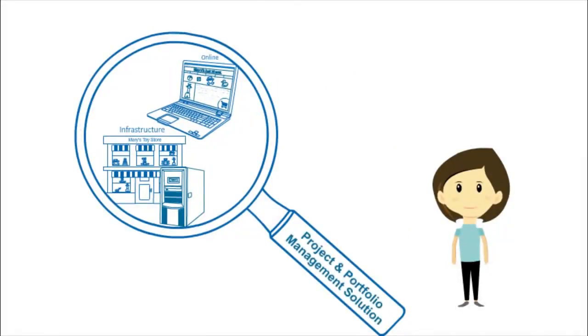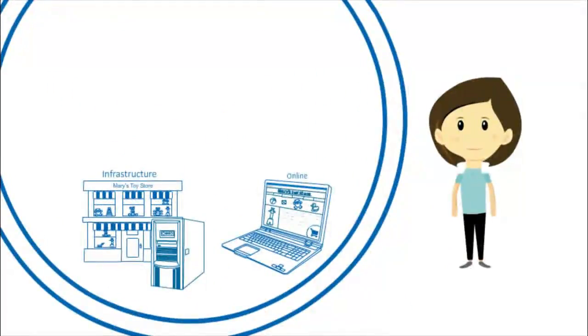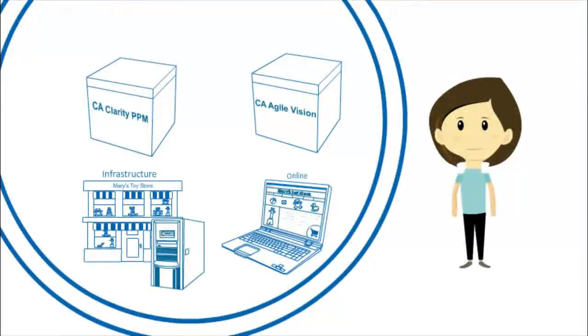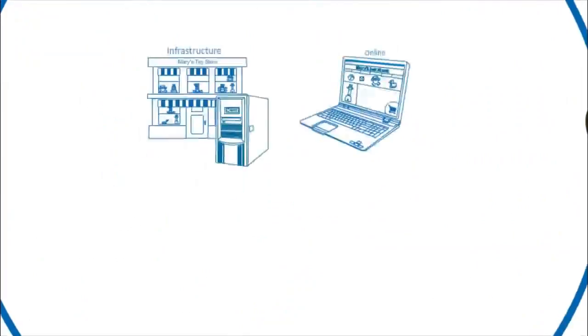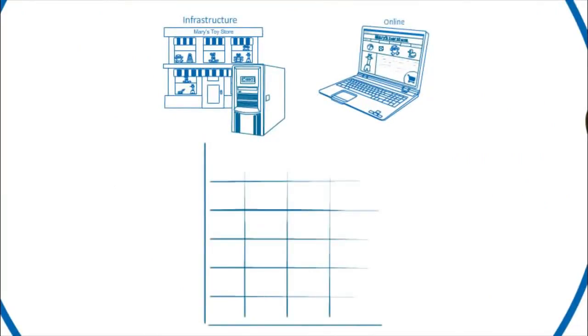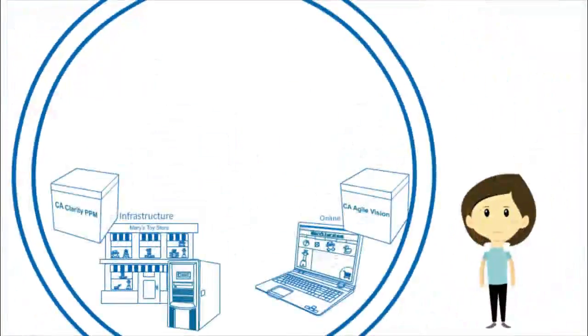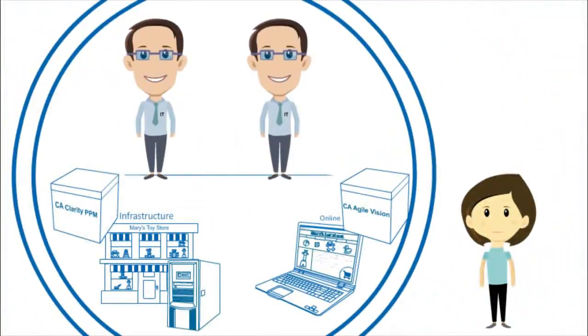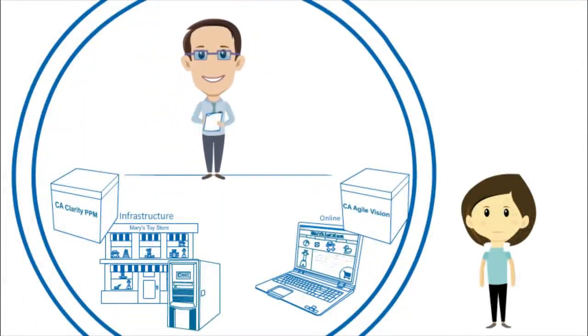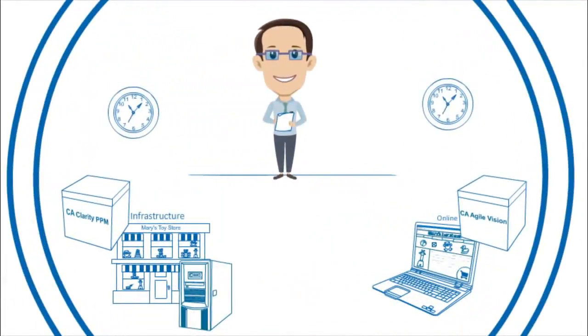Mary did some research to figure out which program would work best and found a traditional project solution, which consisted of CA Agile Vision, used to manage agile projects, and CA Clarity PPM, used to manage traditional development projects. The solution has three big benefits. Luke can enter time in CA Agile Vision and it will automatically show up in CA Clarity PPM.